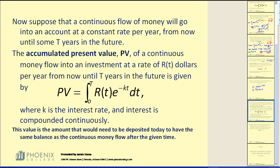Okay, the last topic we're going to take a look at. Suppose that a continuous flow of money will go into an account at a constant rate per year from now until t years into the future. The accumulated present value, PV,